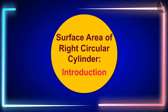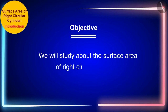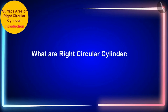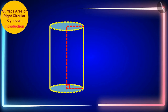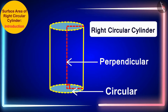Hello friends, welcome to this video. Today, in this video, we will study about the surface area of right circular cylinder. Do you know what are right circular cylinders? Cylinders whose base is circular and whose curved part is perpendicular to its base are called right circular cylinders. Let us learn more about it in this video.